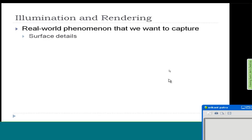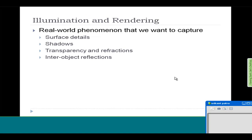What are the real-world phenomena that we want to capture or simulate? We want surface detail, so if there's a very detailed object with many features, you want to capture that. You want to capture shadows in the scene. There's transparency and refraction because you have different kinds of objects. For example, looking through water or glass.